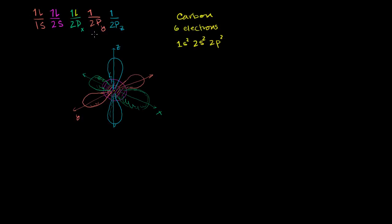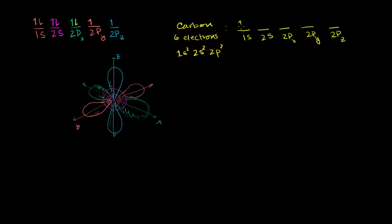So if you go based on what we just talked about, what you would expect for carbon: you have your 1s orbital, your 2s orbital, and then your 2px, 2py, and 2pz orbitals. The 1s orbital fills first — first and second electrons — then the 2s orbital fills: third and fourth electrons. Then you would expect your fifth electron to go into the 2px, and your sixth to go into another p orbital. So that would be the expected configuration for carbon.